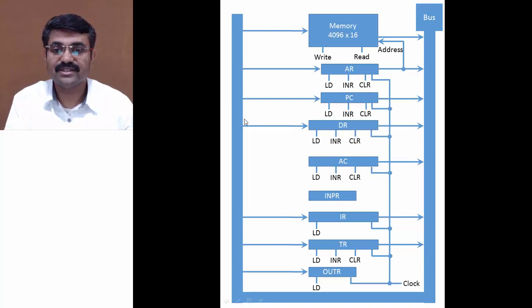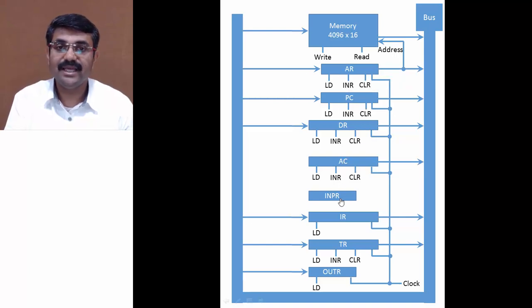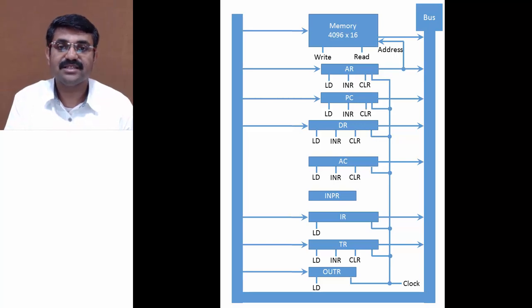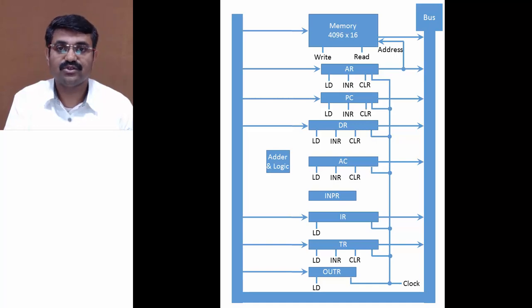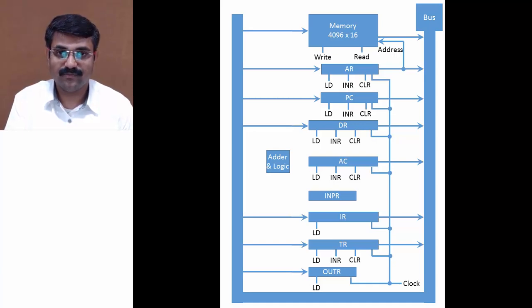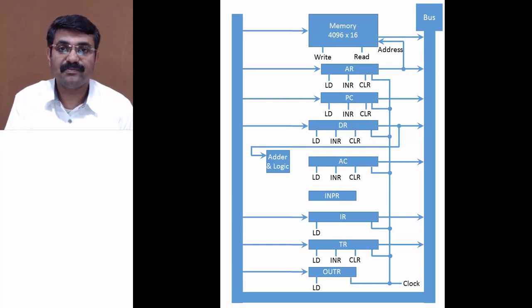However, AC and INPR cannot get input directly from the bus. There is one more unit — the Adder and Logic Unit (ALU) — a computer cannot work without the ALU. This adder and logic unit will have three inputs. The first input comes from the Data Register — when DR transfers data to the bus, it also transfers data to the adder and logic unit.